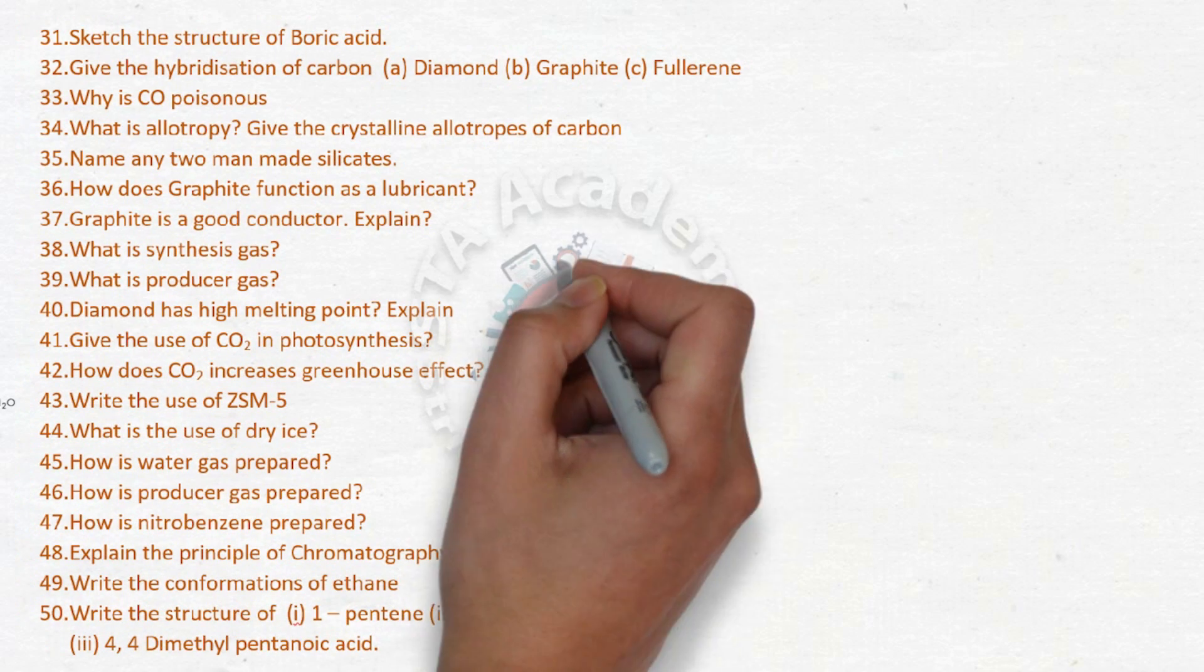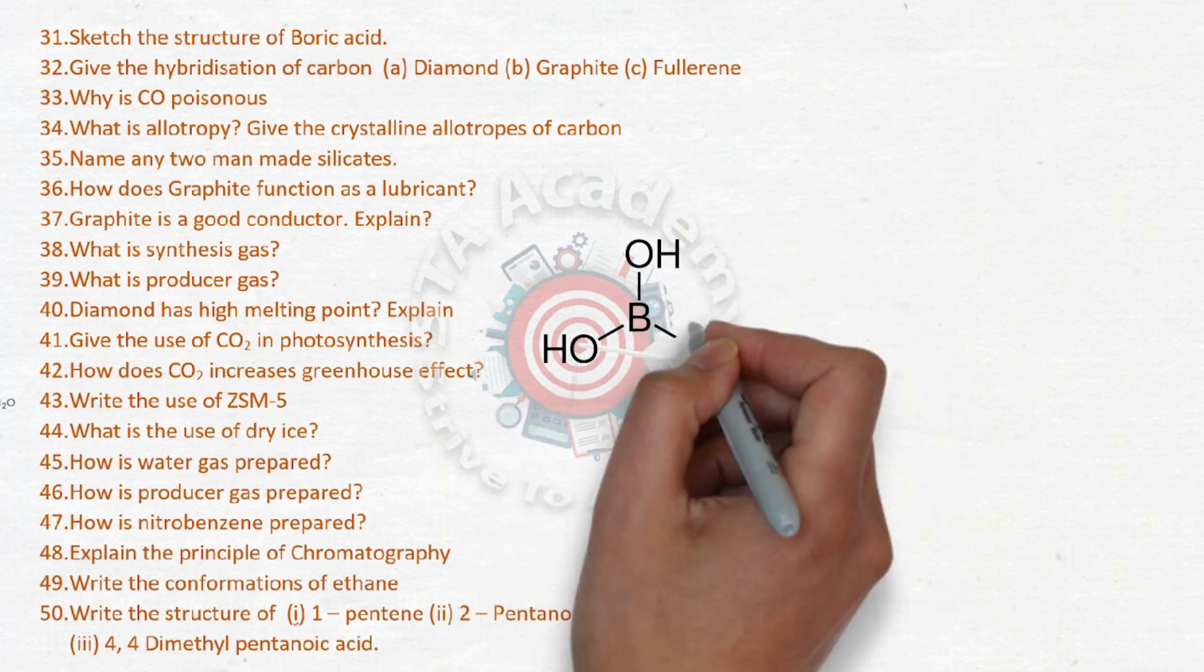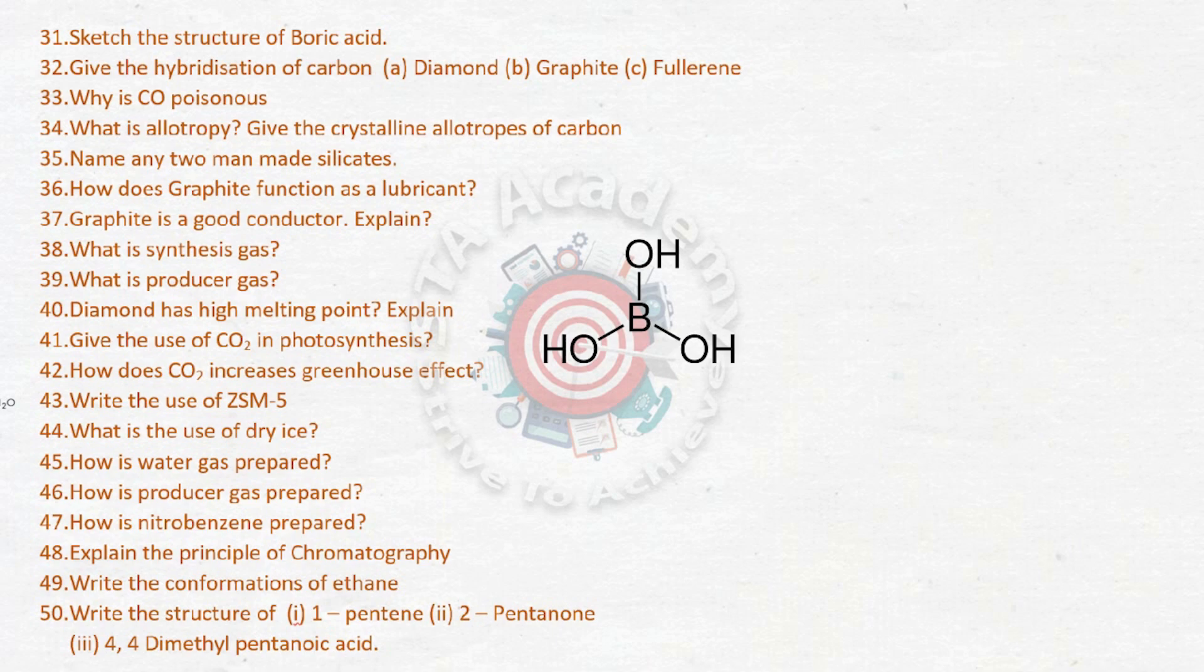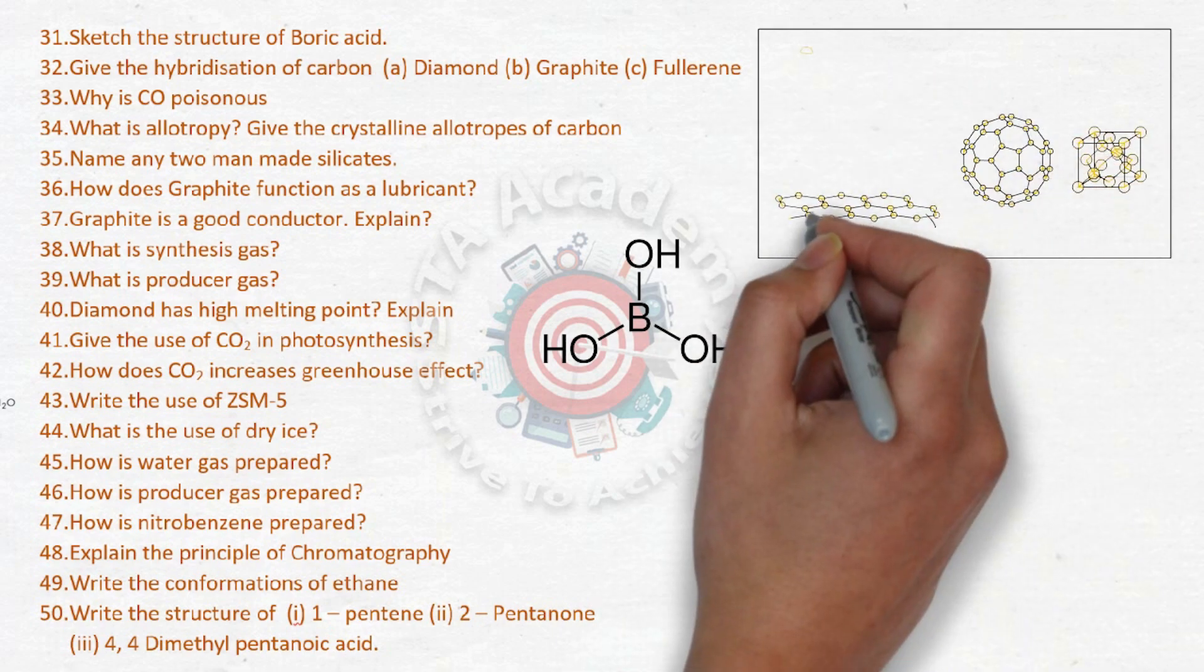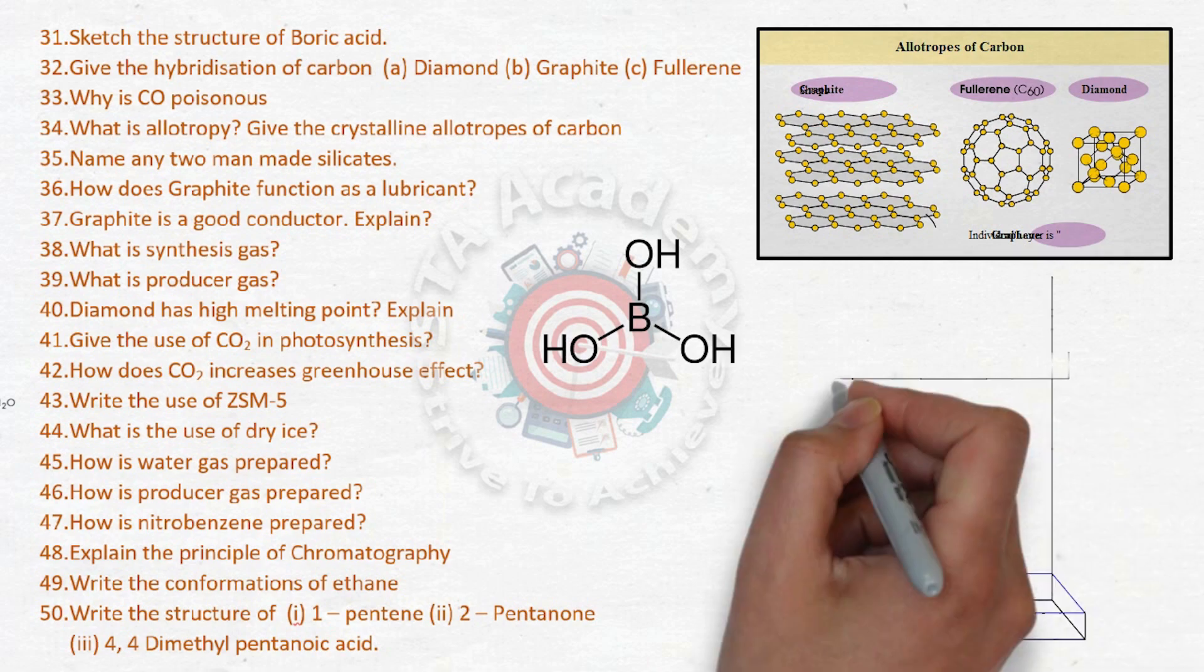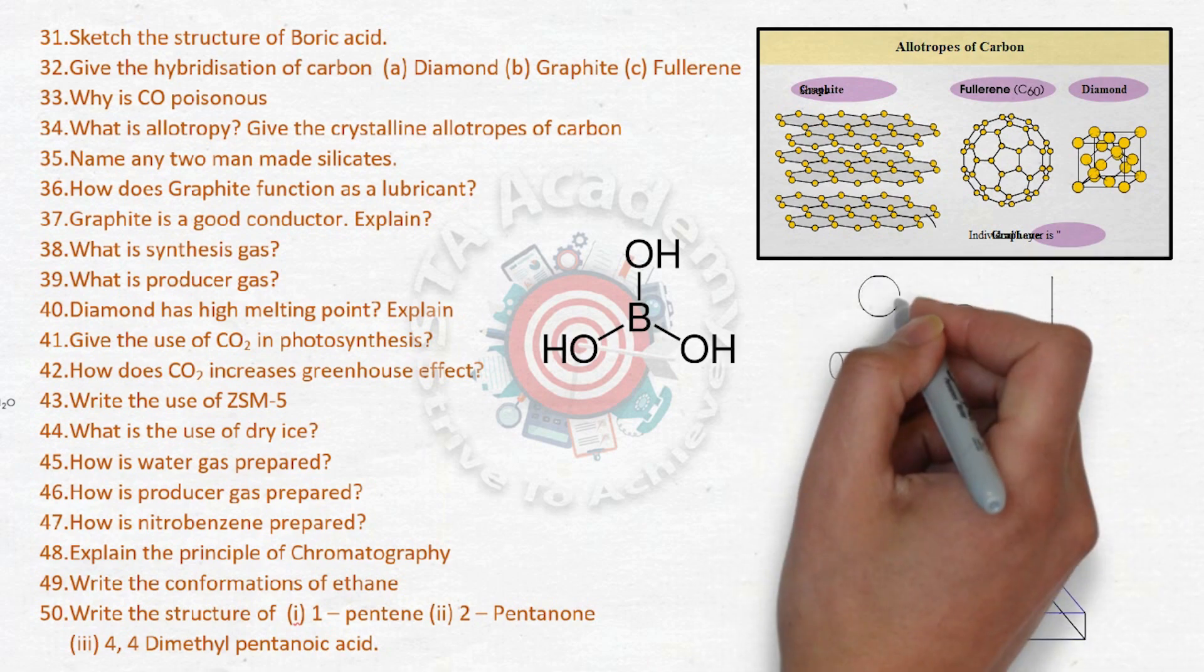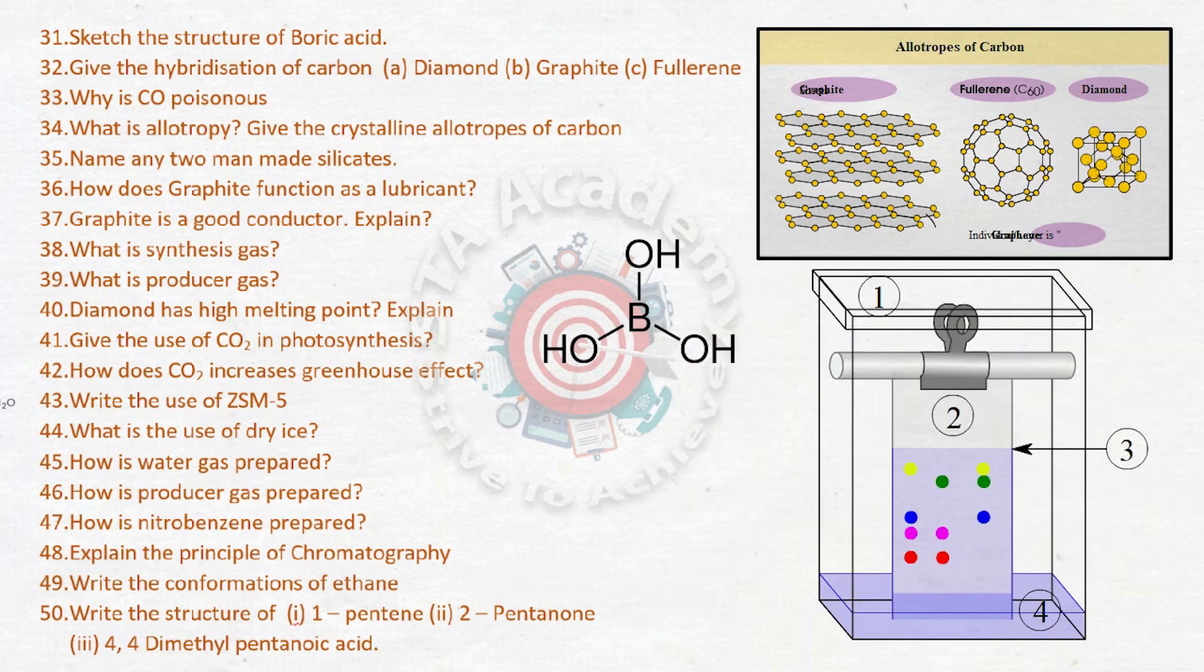Thirty-eighth, what is synthesis gas? Thirty-ninth, producer gas. Fortieth, diamond has high melting point, explain. Forty-first is also given, what is the use of CO2 in photosynthesis? How does CO2 increase greenhouse effect? Forty-third is what is the use of ZSM-5? Forty-fourth, what is the use of dry ice?